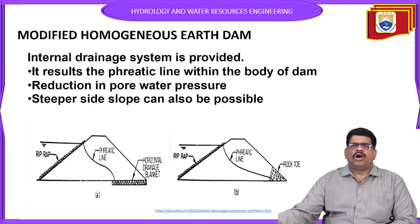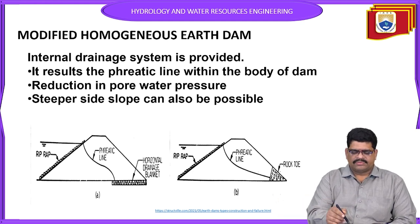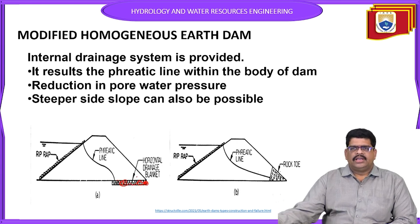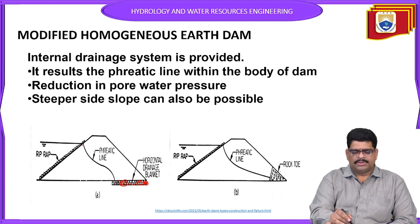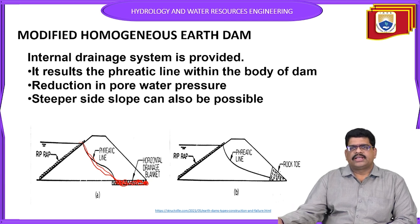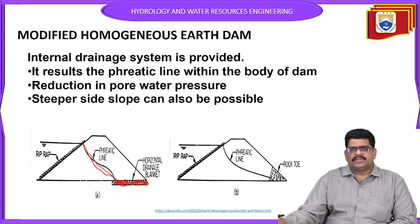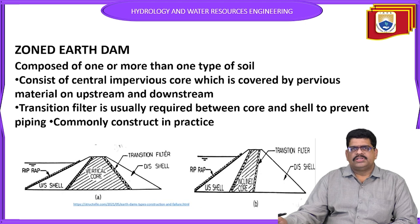The next one is a modified homogeneous earthen dam. In the modified homogeneous earthen dam, an internal drainage system is provided. This internal drainage system is provided at the bottom. It reduces pore water pressure, allowing water to travel from top to bottom through filters to remove water from inside the dam, making steeper side slopes possible.